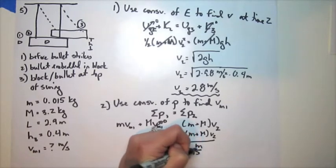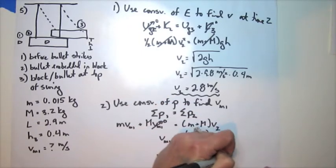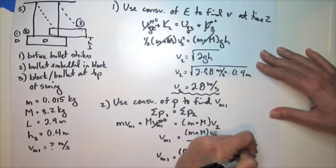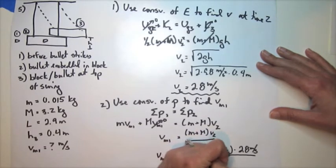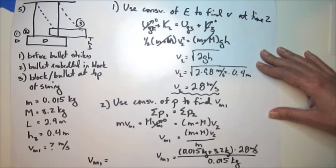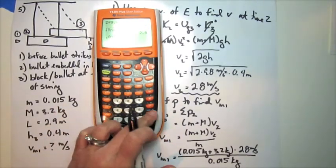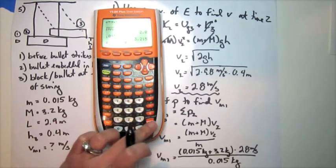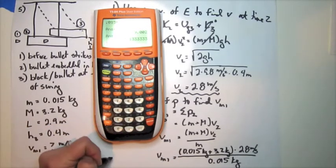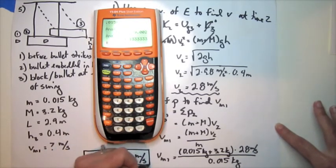Now it's just plugging in. 0.015 plus 3.2 times 2.8 divided by 0.015. 600 meters per second. Ta-da!